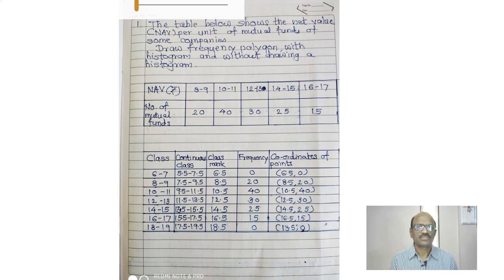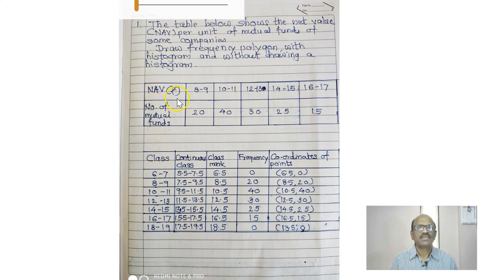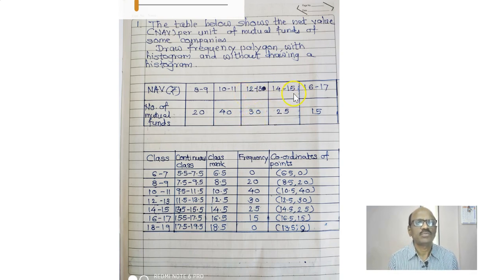Now here the table shows the net value, that is the NAV per unit of the mutual funds of some companies. Draw the frequency polygon with the histogram and without drawing a histogram. The NAV in groups: 8 to 9 is 20, 10 to 11 is 40, 12 to 13 is 30, 14 to 15 is 25, 16 to 17 is 15.